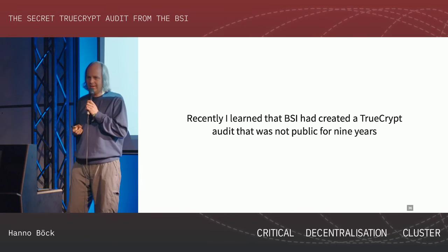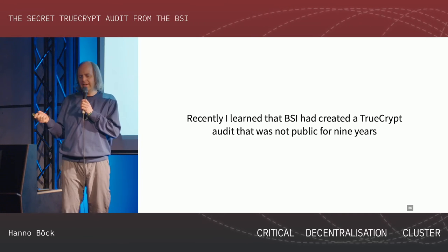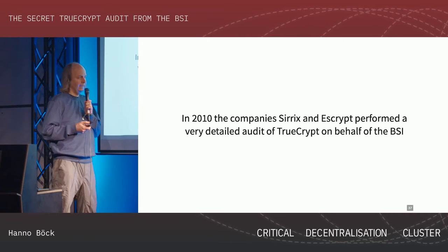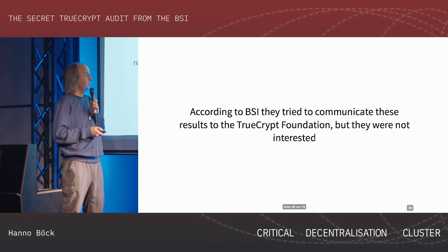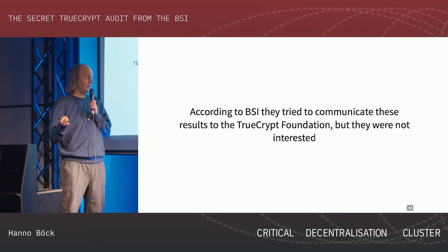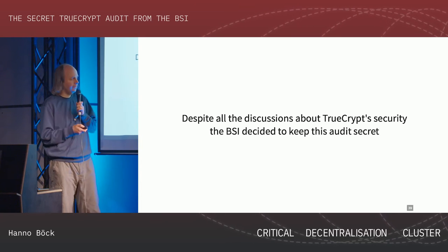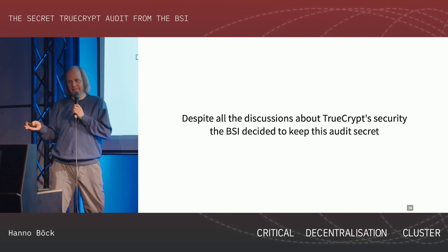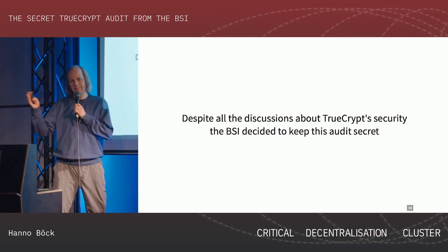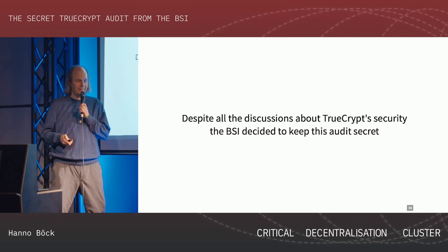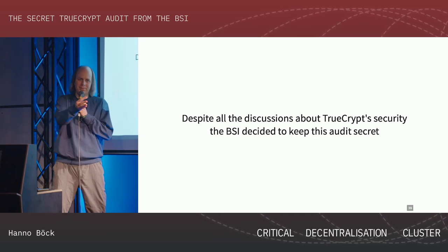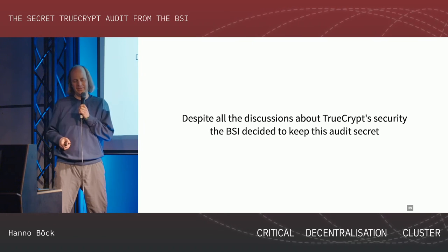Recently I learned that the BSI had created an audit of TrueCrypt that was secret for nine years. It was created in 2010 and was performed by two companies called Xerix and S-Crypt, and was extremely detailed - hundreds of pages. According to the BSI, they tried to communicate the results of these audits to the TrueCrypt Foundation, but they were not interested. And despite all this discussion, with Matthew Green's initiative starting in 2013 and the mysterious TrueCrypt message, they had a detailed audit report sitting on their desk and decided not to say anything.